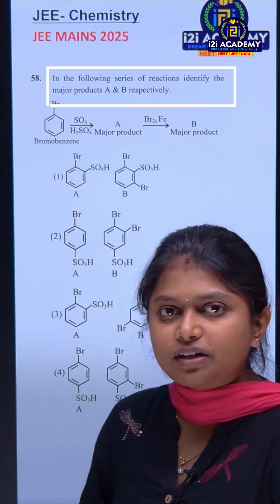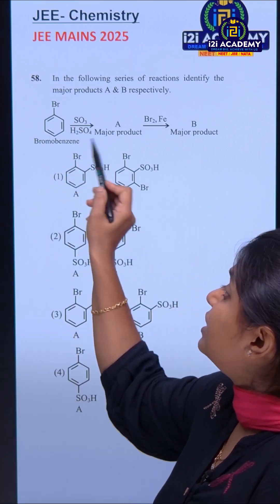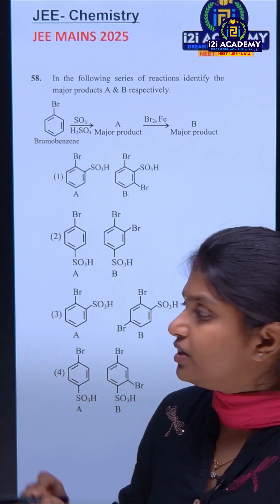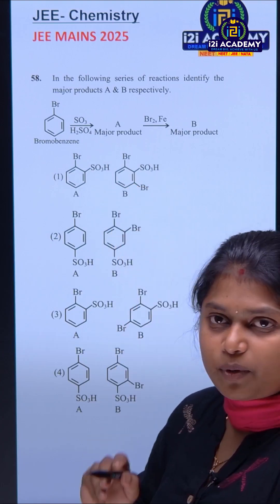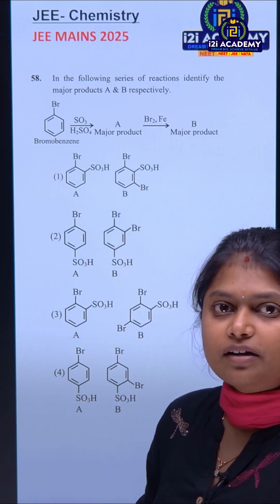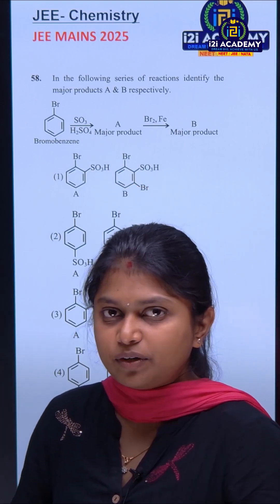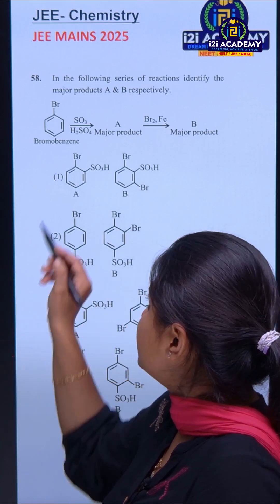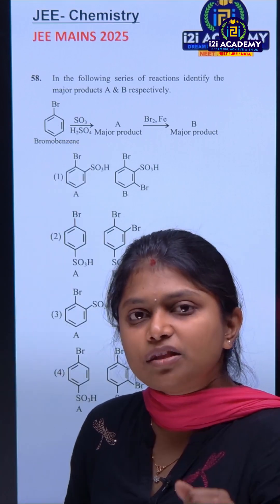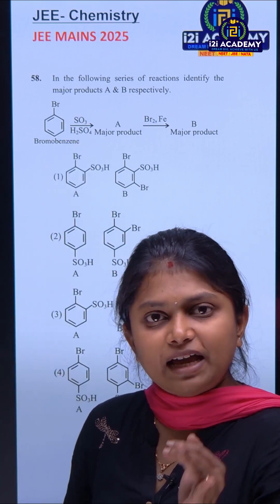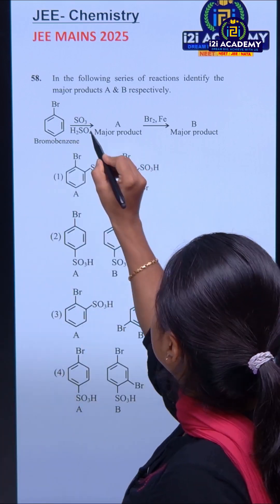We have a reaction where Bromobenzene is undergoing a sulfonation reaction. This is the major product. It is an electrophilic substitution reaction. With respect to Bromobenzene, we have two different products — the ortho product and the para product.